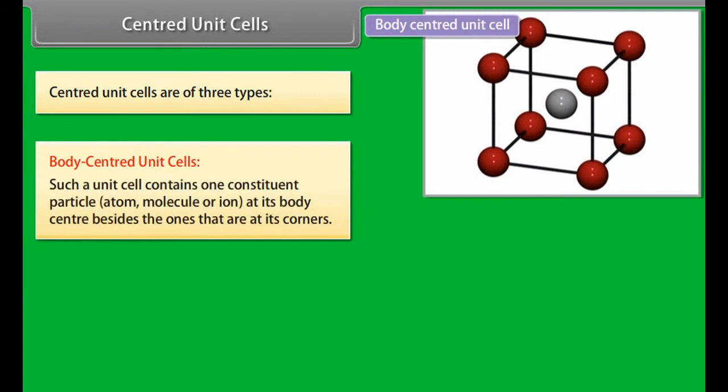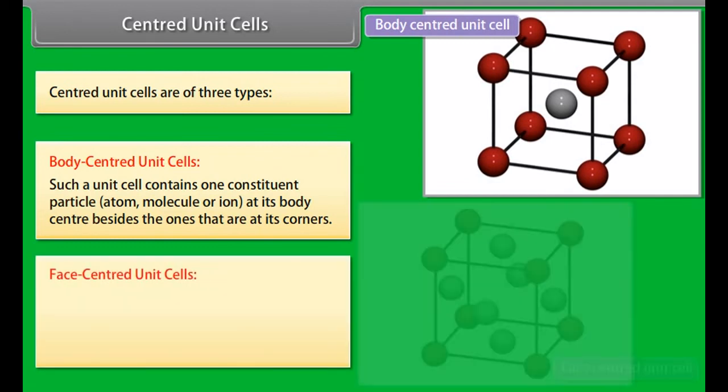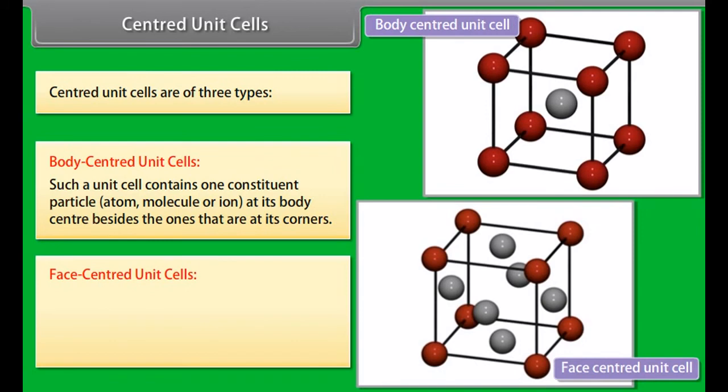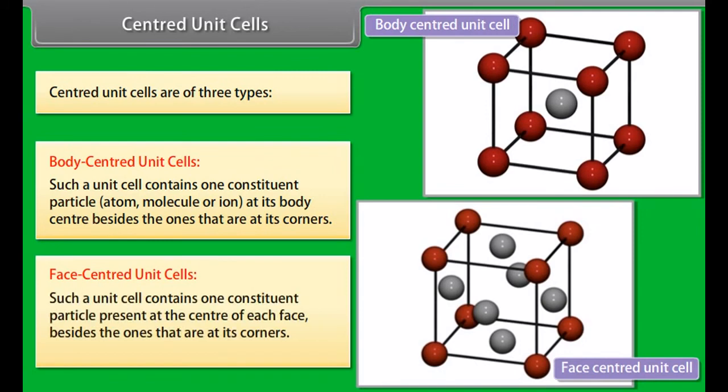In covalent or network solids, covalent bonds are strong and directional in nature, so atoms are held very strongly at their positions. Such solids are very hard and brittle with extremely high melting points and may even decompose before melting. They are insulators and do not conduct electricity. Examples: diamond, silicon, carbide.